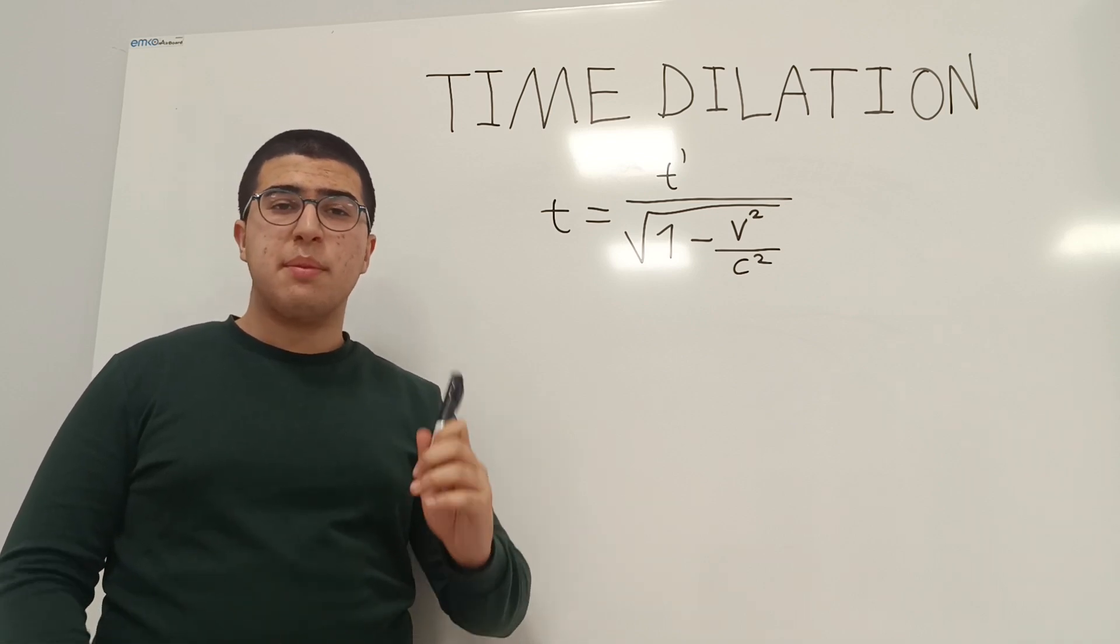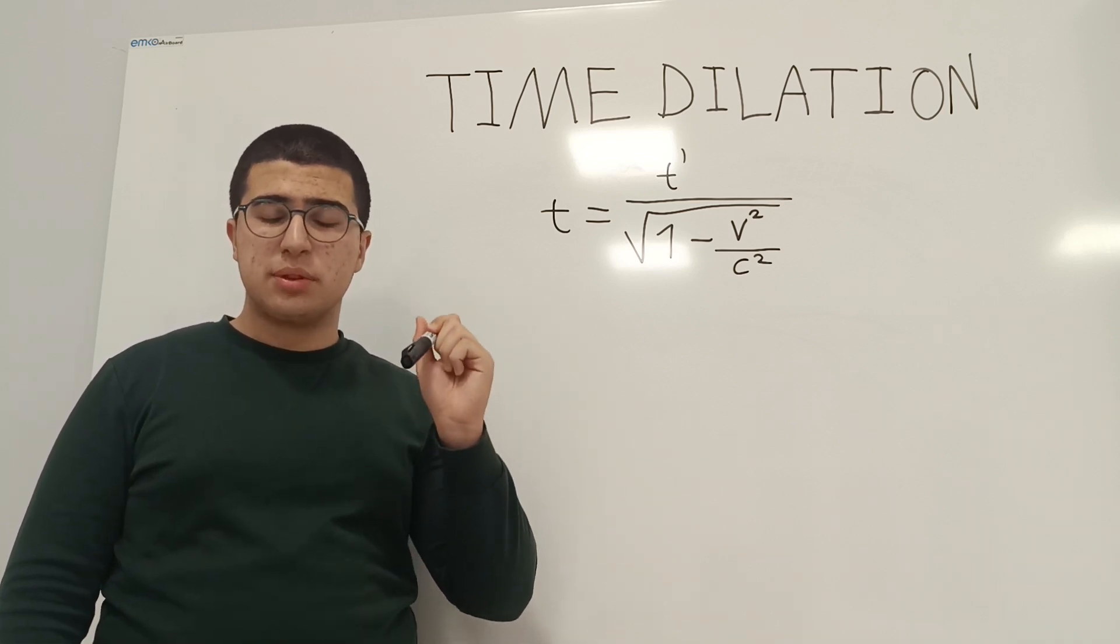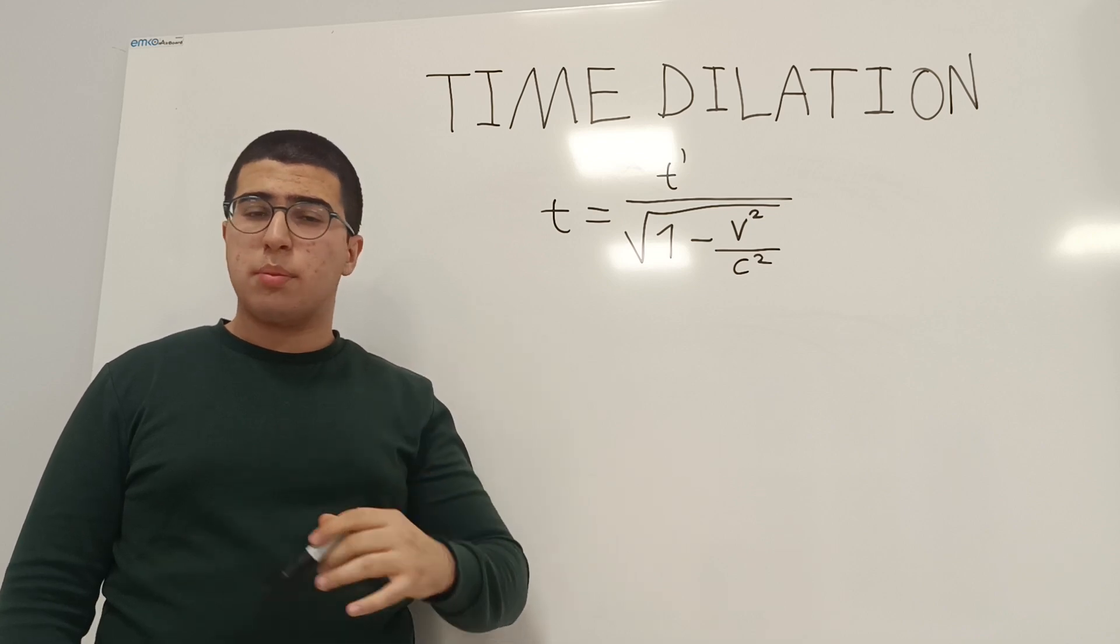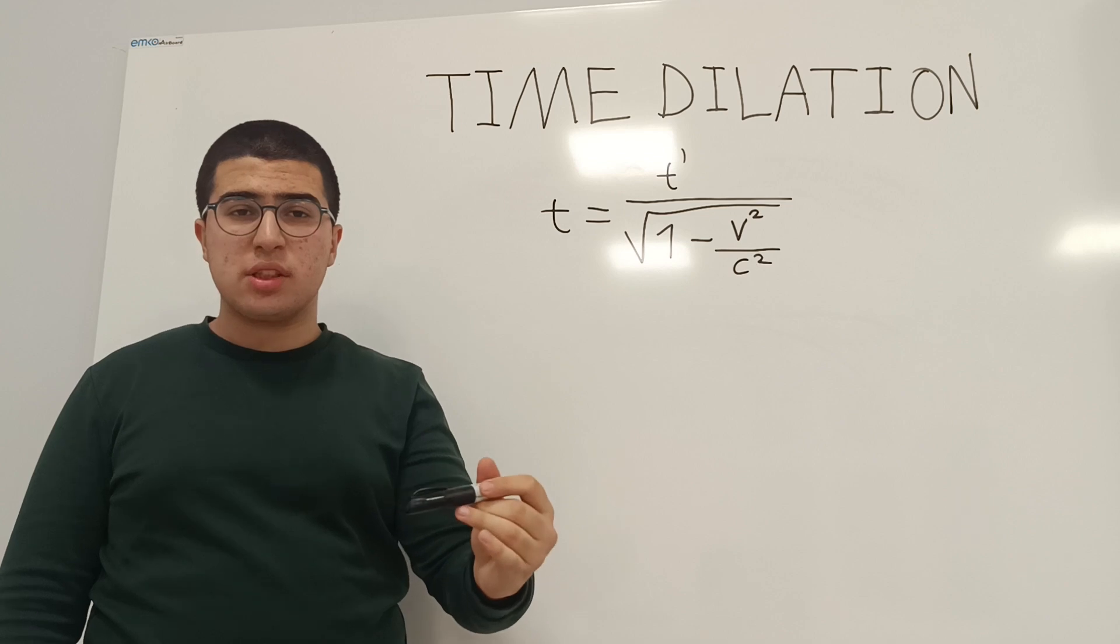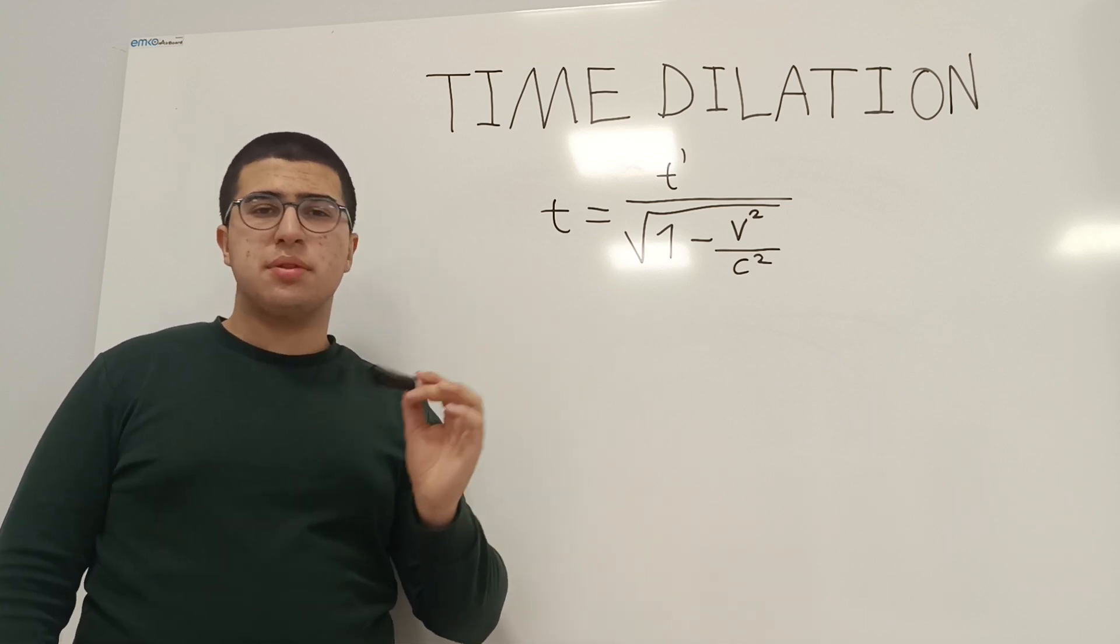To understand what this means, imagine that you have a friend who is the same age as you, you are both 16 say, and your friend gets into a spaceship and travels close to the speed of light.